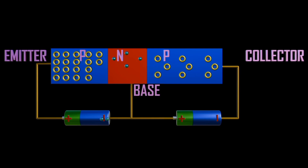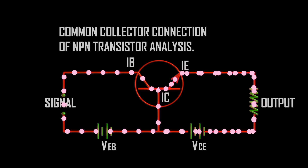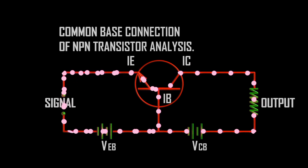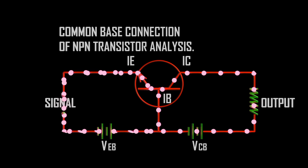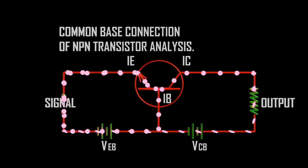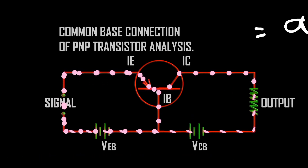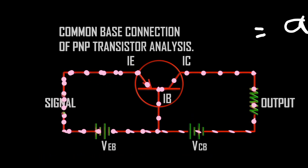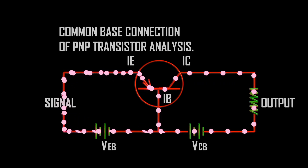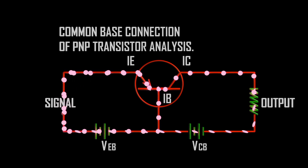Transistor connections include common base, common emitter, and common collector. In the common base connection, which can be PNP or NPN, the current amplification factor is denoted by alpha. Alpha equals the change in I_C over the change in I_E. The practical value is less than unity, typically in the range of 0.9 to 0.99.